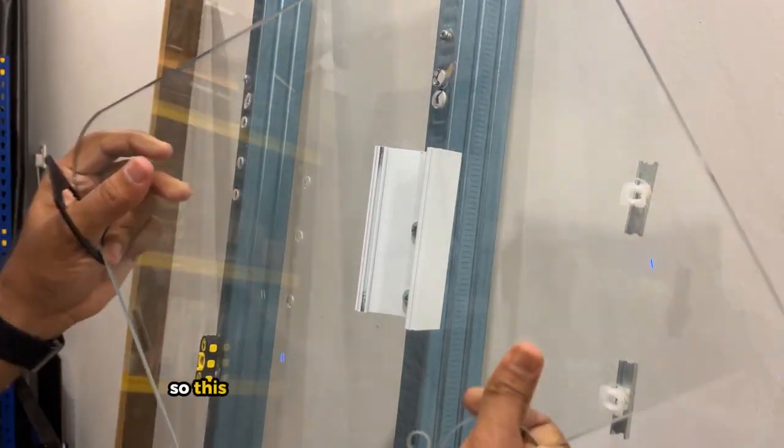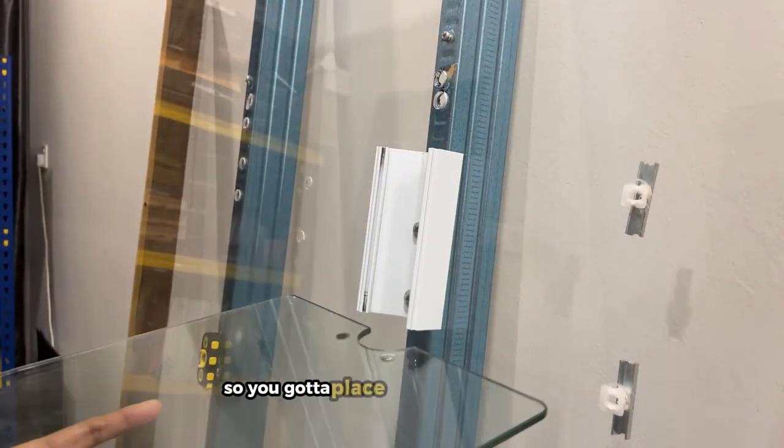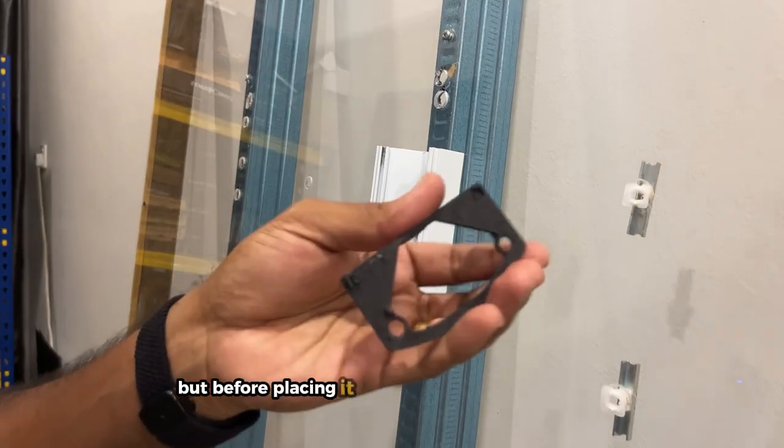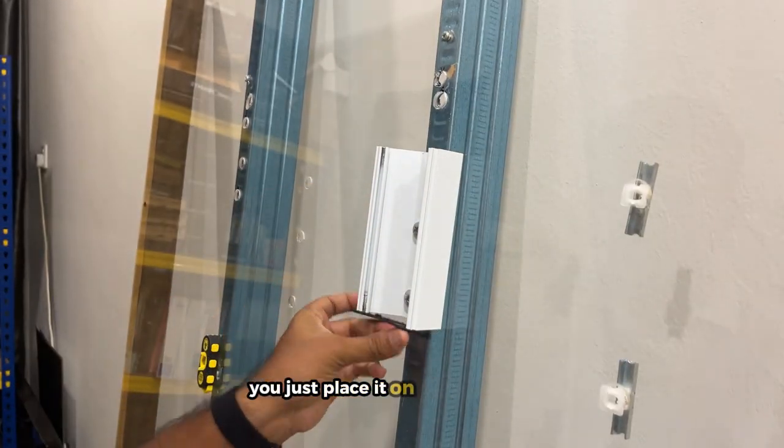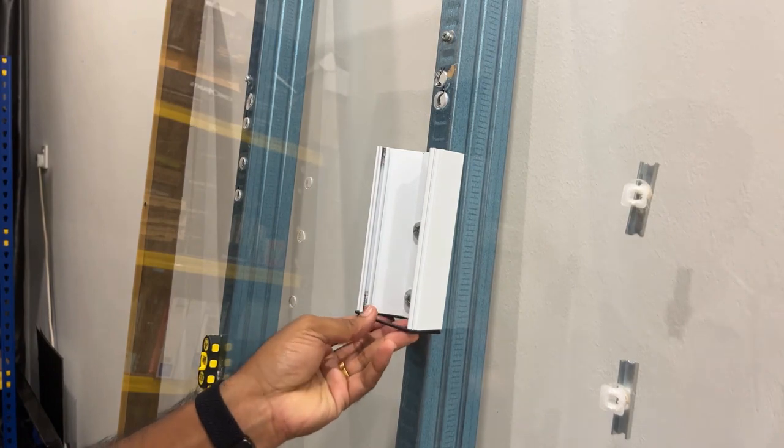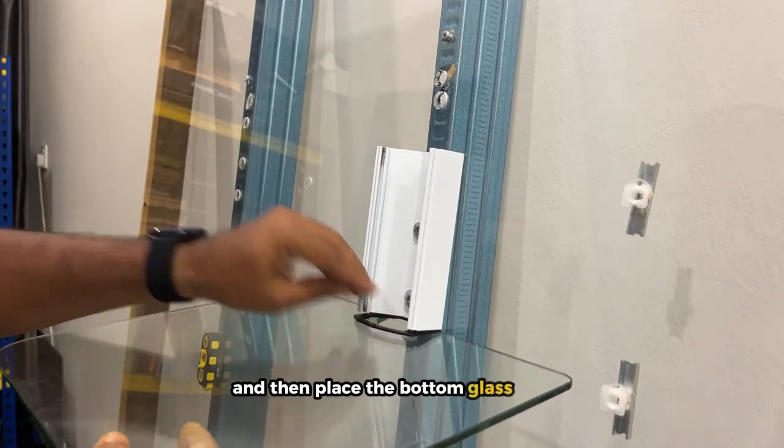So this is one of the glasses included - there are two of these glasses. You got to place the bottom one first, but before placing it there is this rubber strip right here. Just place it on the main unit, just put it in like that, and then place the bottom glass first, the bottom shelf.